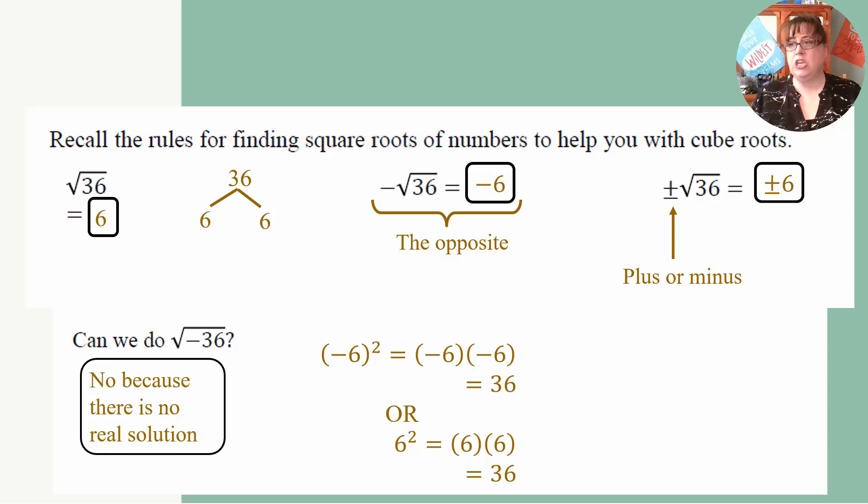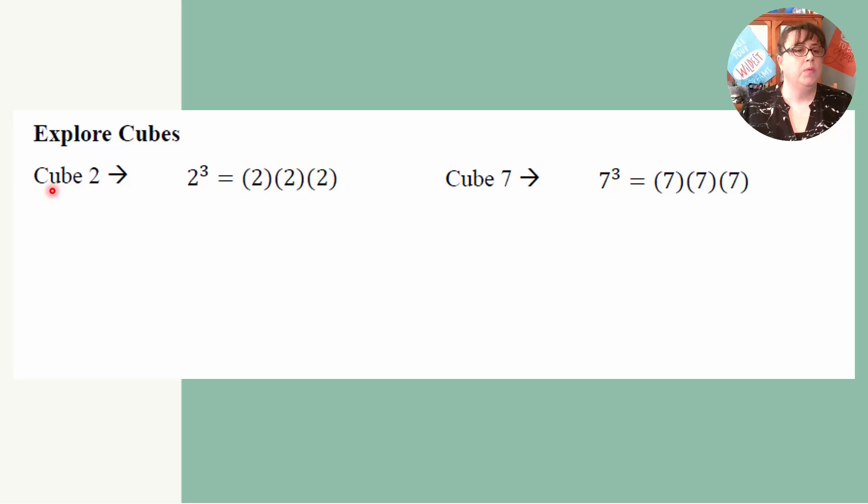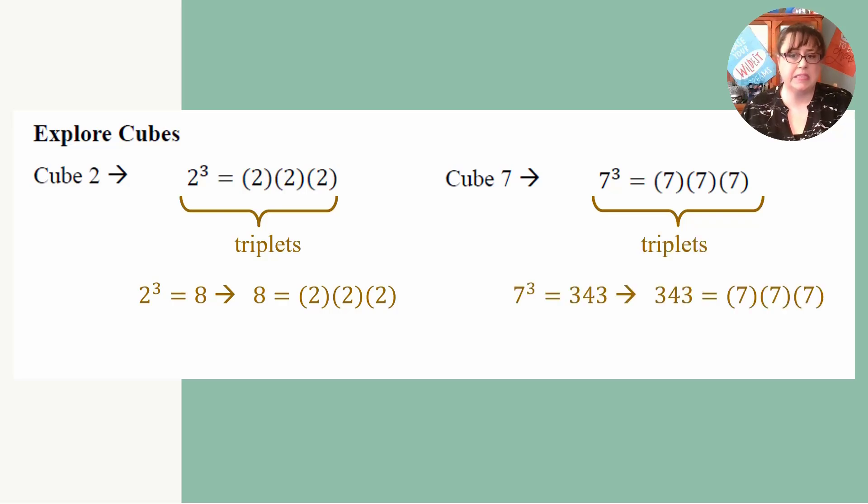But when we get into cubes, that story is different. The cube of 2, which is 2 to the third, which is 2 times 2 times 2, looks different. These are triplets. So 2 cubed is 8, and 8 is 2 times 2 times 2. The cube of 7, which is 7 cubed, which is 7 times 7 times 7, again, those are triplets, is 343. 7 times 7 is 49, and 49 times 7 is 343.